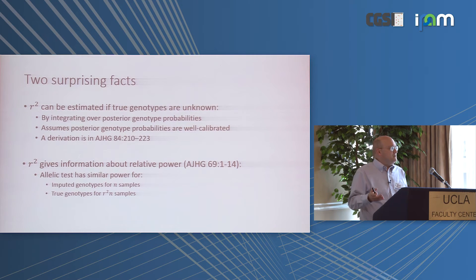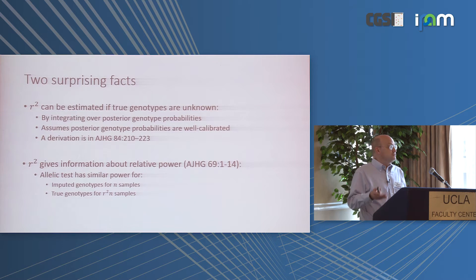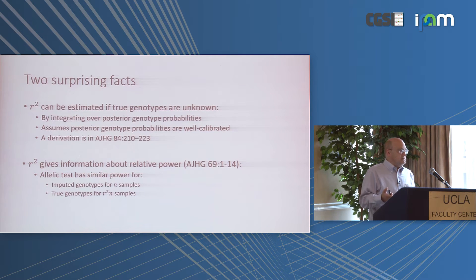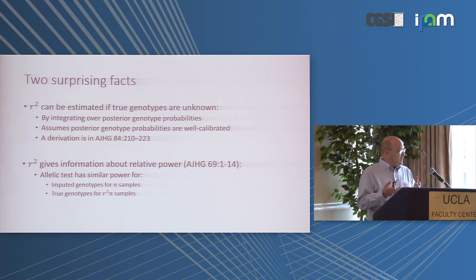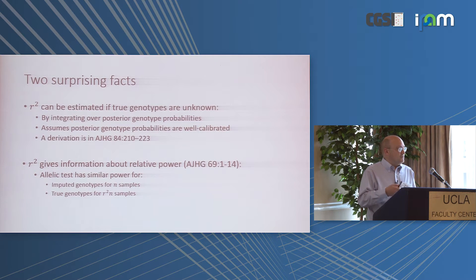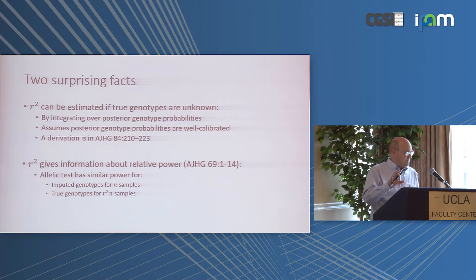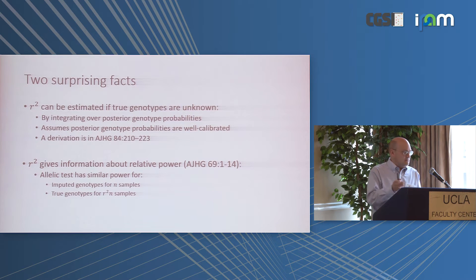The squared correlation metric looks at the expected correlation between the imputed allele dose and the true number of copies of alleles in samples. R-squared can be estimated even if the true genotypes are unknown — assuming your posterior genotype probabilities are well calibrated, you can estimate the correlation from the imputed data itself. This idea was developed by Michigan, and a derivation is given in the referenced American Journal of Human Genetics article.